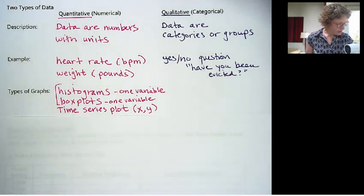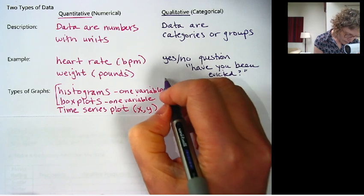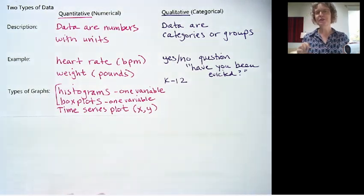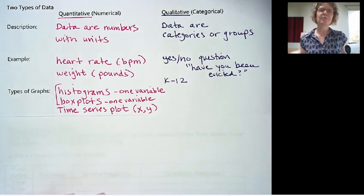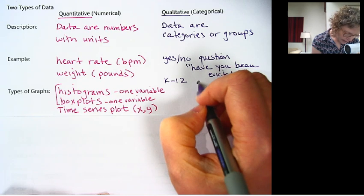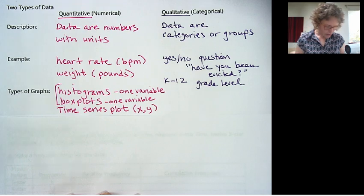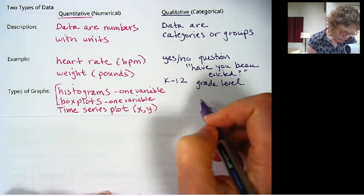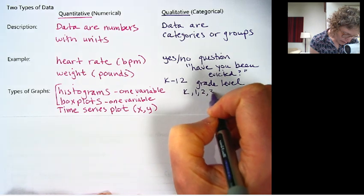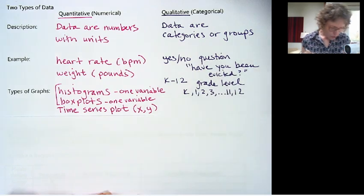Another one, another example would be grade level. Let's say K through 12, for example. I want to use this example because there actually are numbers. Sometimes you can have a number representing a category. So let's say in K through 12, so your grade level, not your grade level because you're in college, but someone's grade level would start from K, 1, 2, 3, dot, dot, dot, all the way up to 11 or 12.